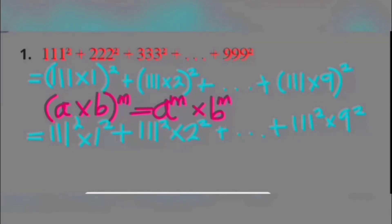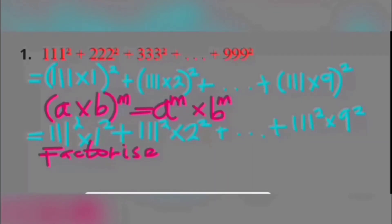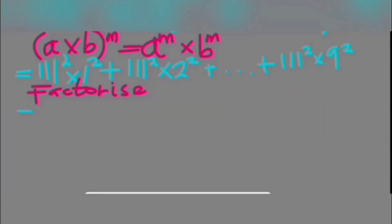So what we do next is factorize. We factorize the highest common factor, or what we can call the greatest common factor. The expression becomes 111 squared, as that is the greatest common factor. Inside the brackets, we are going to have the sum of the squares of 1, 2, 3, and so on, up to 9.